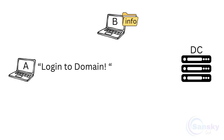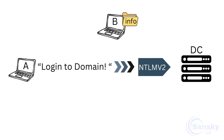As illustrated here, we have two systems A and B along with a domain controller on the right side. Client A seeks access to a shared folder on system B. To initiate this process, system A requests to log in to the domain by sending its password as an NTLMV2 hash to the DC.